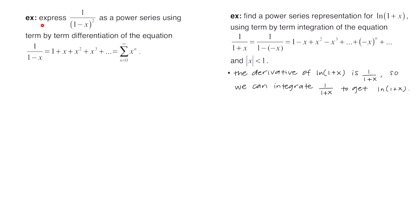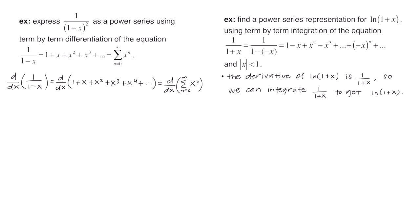This example says: express the function 1 over 1 minus x quantity squared as a power series using term by term differentiation, and we're going to do so using this equation from our previous lesson. I took this equation and wrote that we're going to take the derivative of it — the d/dx of 1 over 1 minus x, then the derivative of the expanded form, and finally the derivative of the sigma notation.